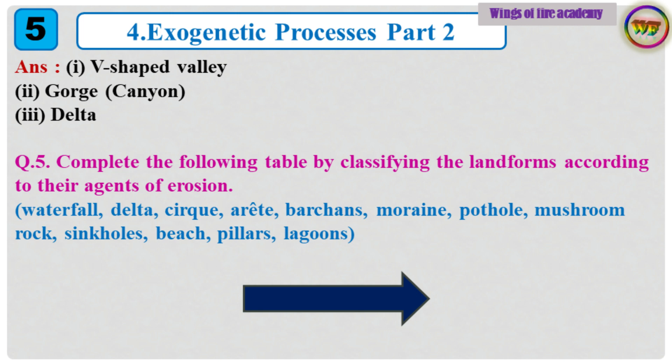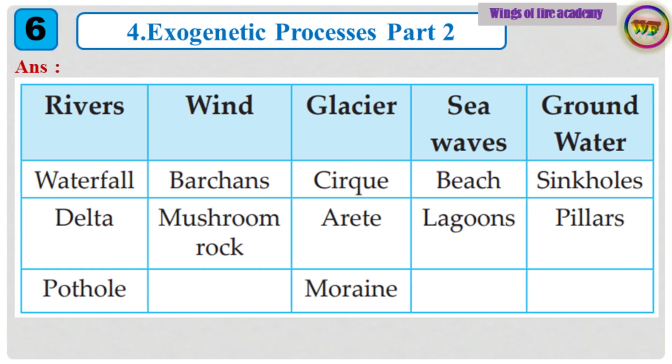Question 5: Complete the following table by classifying the landforms according to their agents of erosion. Landforms listed: Waterfall, delta, cirque, arete, barchans, moraine, pothole, mushroom rock, sinkholes, beach, pillars, lagoons. Answer: Correct.